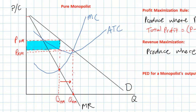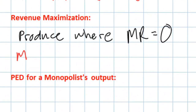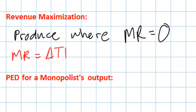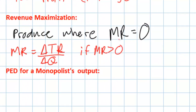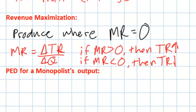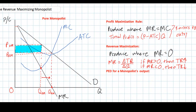Why is QRM the revenue maximizing quantity? Marginal revenue is the change in total revenue resulting from a change in output. As the firm's output increases from zero to QRM, its marginal revenue is positive, meaning total revenue is increasing. However, if marginal revenue is less than zero, then total revenue is decreasing. If the firm continued to produce beyond QRM, its marginal revenue would become negative, and total revenue would fall. Therefore, a firm would never wish to produce beyond QRM.